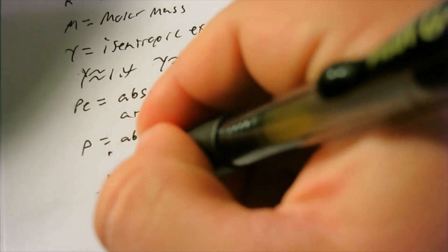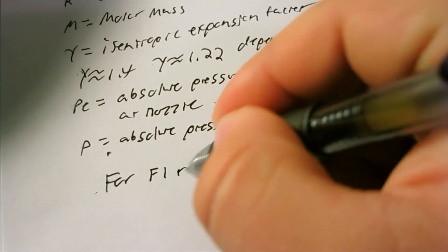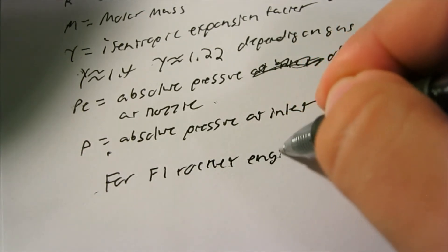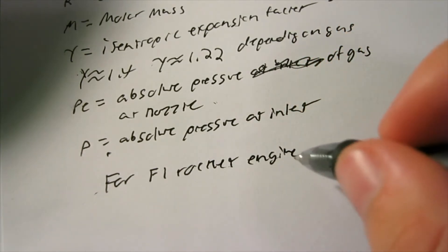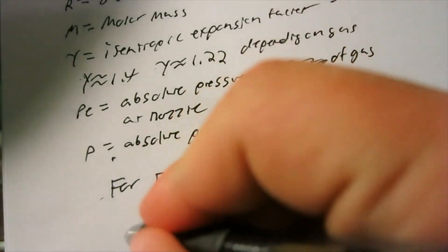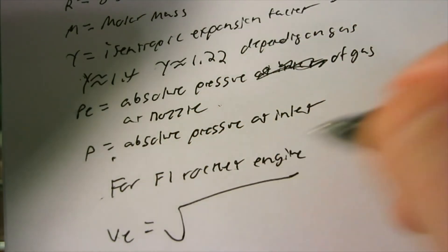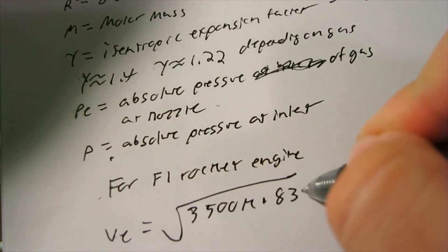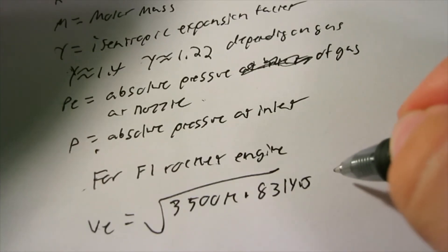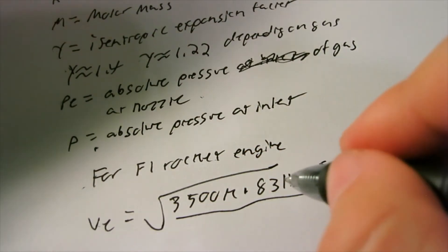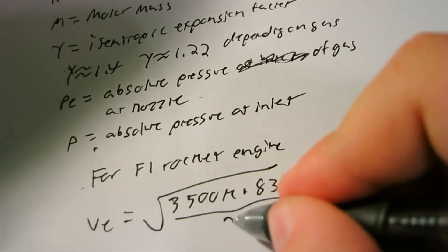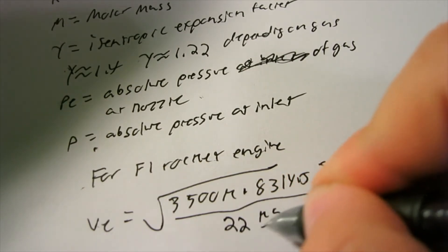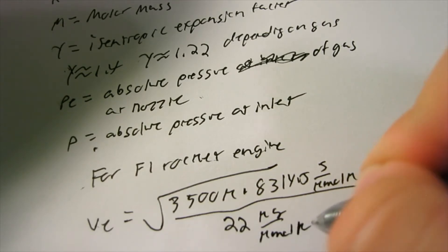Let's do a quick calculation to see what we get. This is for the F-1 engine, which was the engine in the Saturn V rocket. We do V equals square root. Temperature we can use would be 3,500 Kelvin times 8,314.5 joules per kilomole Kelvin, divided by molar mass, which is 22 kilograms per kilomole for the gas that they are using.